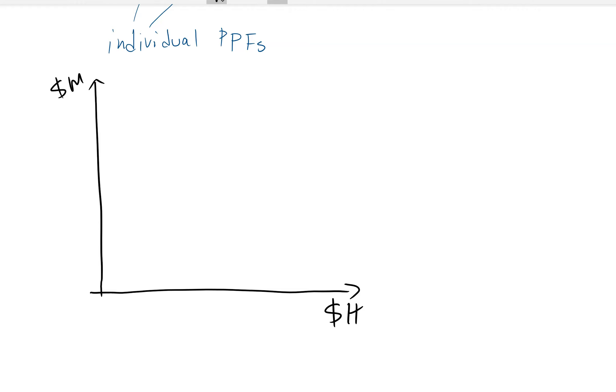But here's my PPF for, let's suppose this is Pat, and this is Alex. And then we put them together into the joint, and this is Pat, and this is Alex. So this is the joint, and this is the individual.